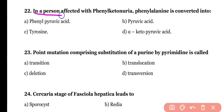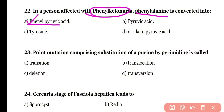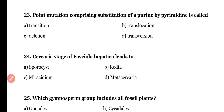Question number twenty-two: in a person affected with phenylketonuria, phenylalanine is converted into (a) phenylpyruvic acid, (b) pyruvic acid, (c) tyrosine, or (d) alpha-ketopyruvic acid. The correct answer is option A — in phenylketonuria, phenylalanine is converted into phenylpyruvic acid.